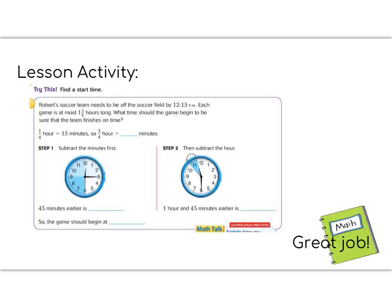Almost finished fifth graders. Today's lesson activity is the try this section. It says, Robert's soccer team needs to be off the soccer field by 12:15. Each game is at most one and three quarter hours long. What time should the game begin to make sure that the team finishes on time?